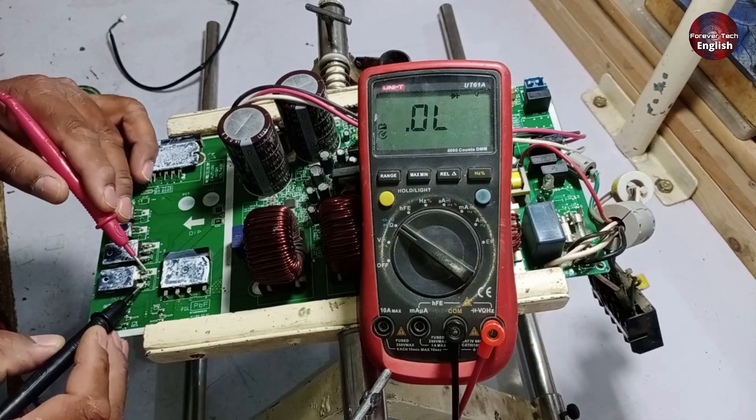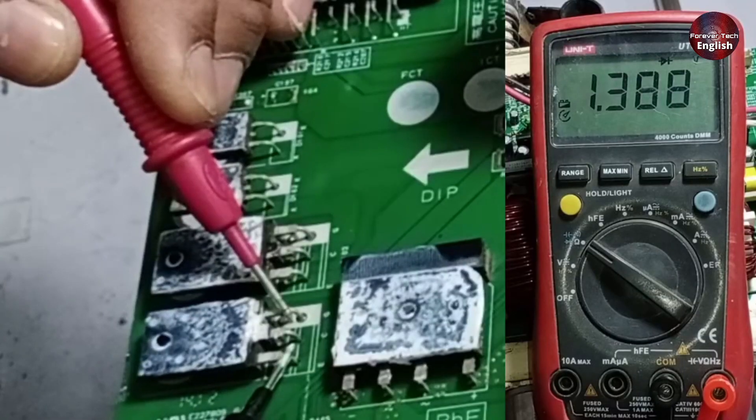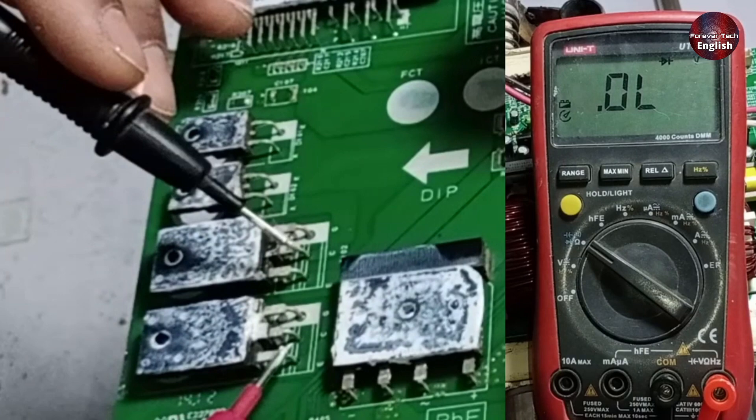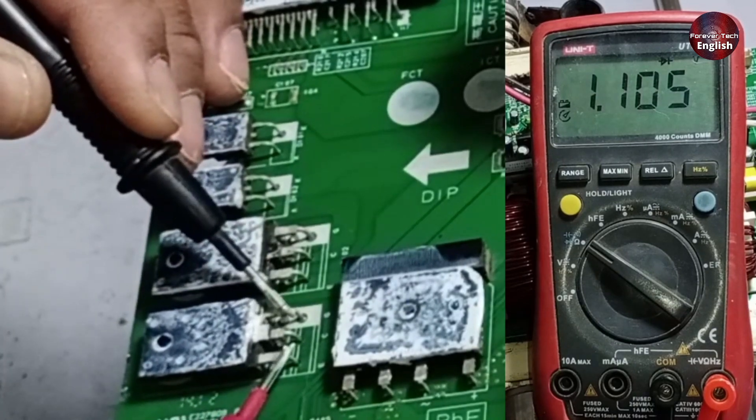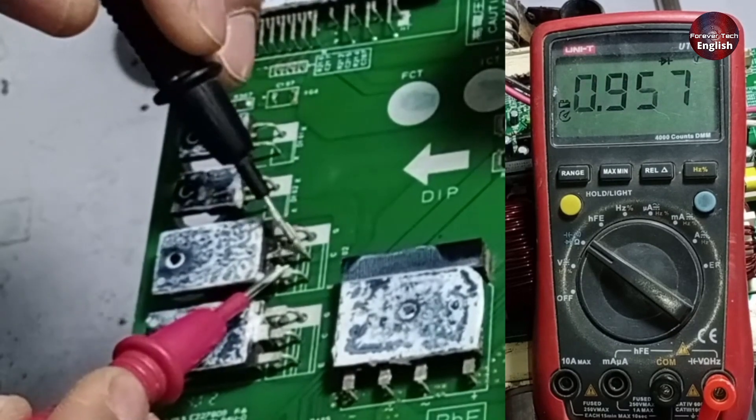Next, we will check the IGBTs. To check them, place the probes on any point. You should not see a reading of 0 anywhere, unless it is a common point. If it is common, that's fine, but if it's not common, there shouldn't be a reading of 0. There is nothing common here, so we keep checking, and there should be no issues. Everything here is fine.